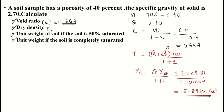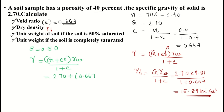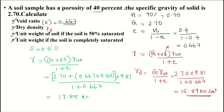Next, we need to calculate the unit weight of soil if the soil is 50% saturated. For 50% saturation, degree of saturation S = 0.50, and the equation for gamma is: gamma = (G + e·S) · γ_w / (1 + e). G is 2.70, e is 0.667, S is 0.50, and γ_w is 9.81, divided by (1 + 0.667). Calculating gamma, we get 17.85 kilonewtons per meter cubed.